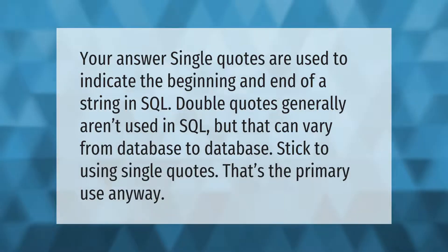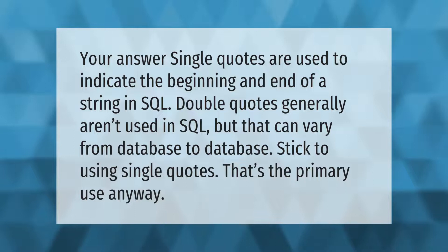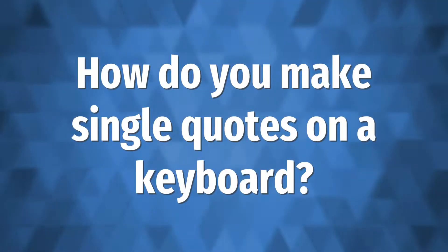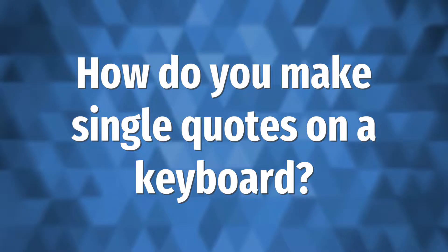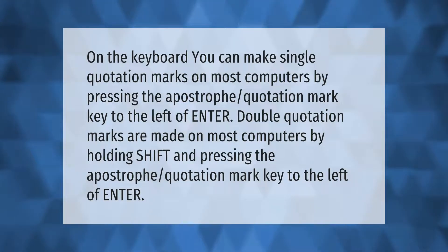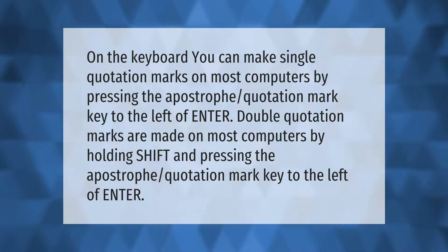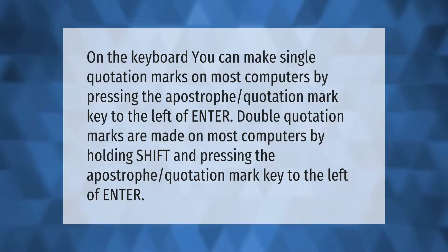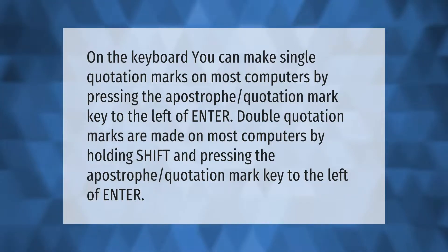On the keyboard, you can make single quotation marks on most computers by pressing the apostrophe/quotation mark key to the left of Enter. Double quotation marks are made on most computers by holding Shift and pressing the apostrophe/quotation mark key to the left of Enter.